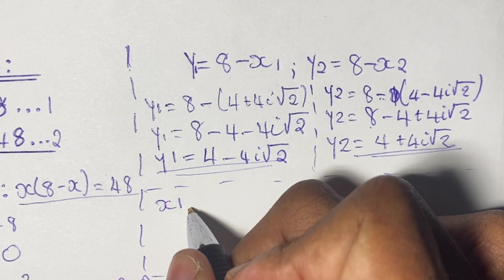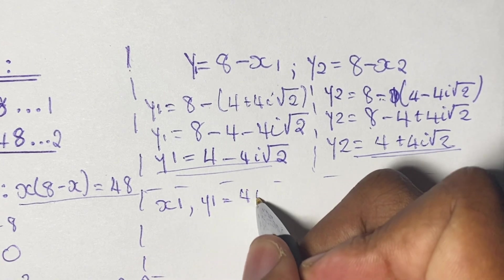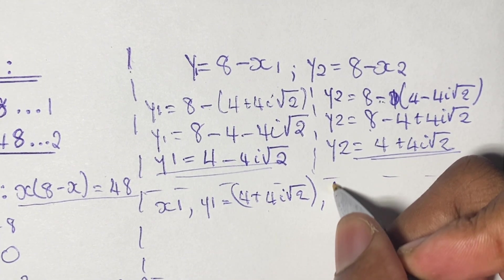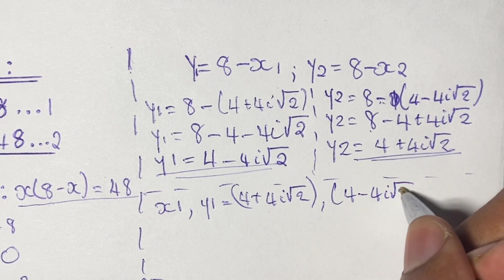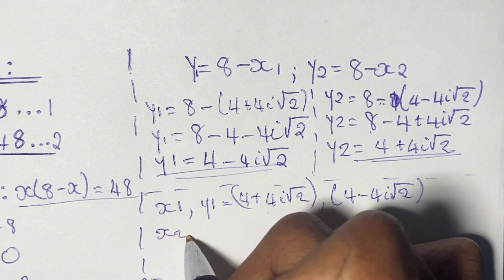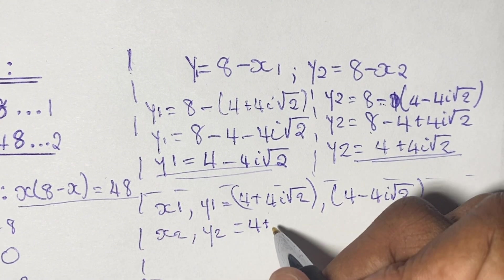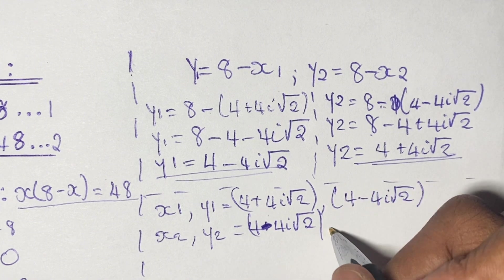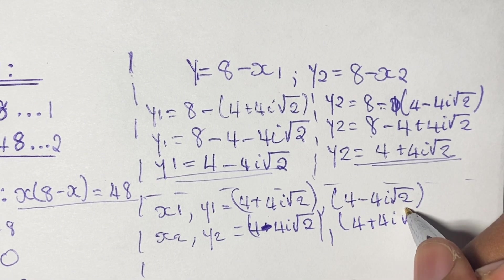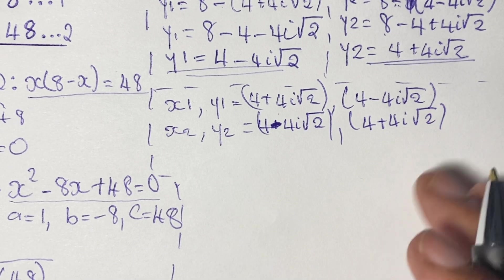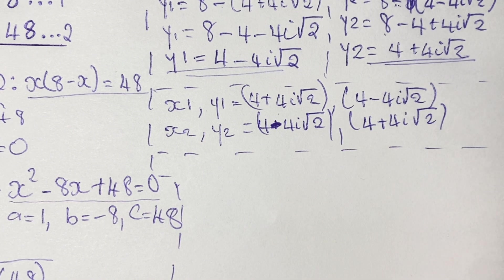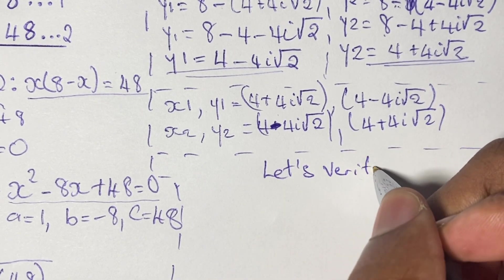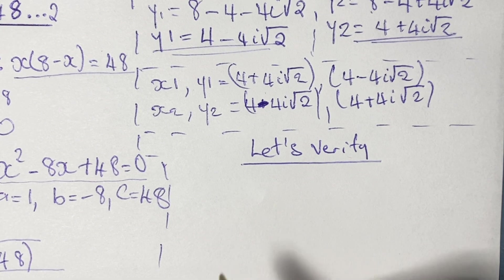We record our solution pairs. The first pair, (x1, y1), is (4 plus 4i√2, 4 minus 4i√2). The second pair, (x2, y2), is (4 minus 4i√2, 4 plus 4i√2). Please bear these pairs in mind as we verify our solutions.